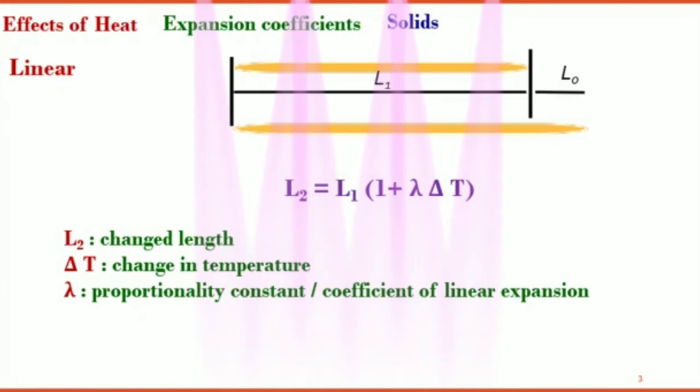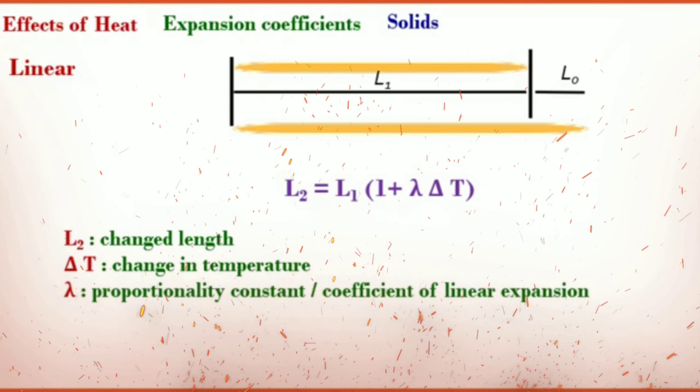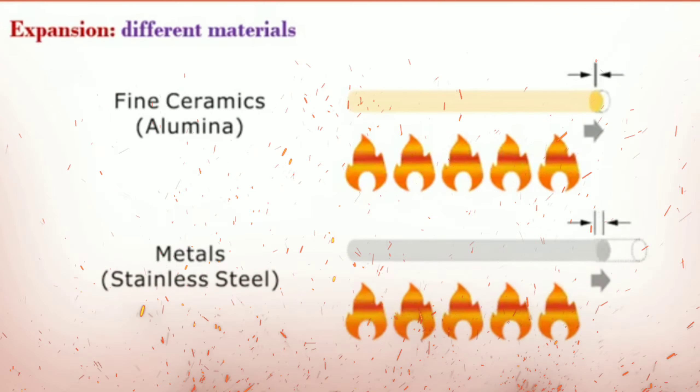The linear expansion of a solid is the increase in length of a wire or a rod of a solid due to increase in its temperature. When we increase the temperature of a rod of length L1 from T1 to T2, its length becomes L2. The change in length is proportional to the original length and the increase in temperature. So we can write the change in length as L2 equals L1 multiplied by 1 plus lambda delta T. Here, lambda is the constant of proportionality and it is called the coefficient of linear expansion of the solid substance.